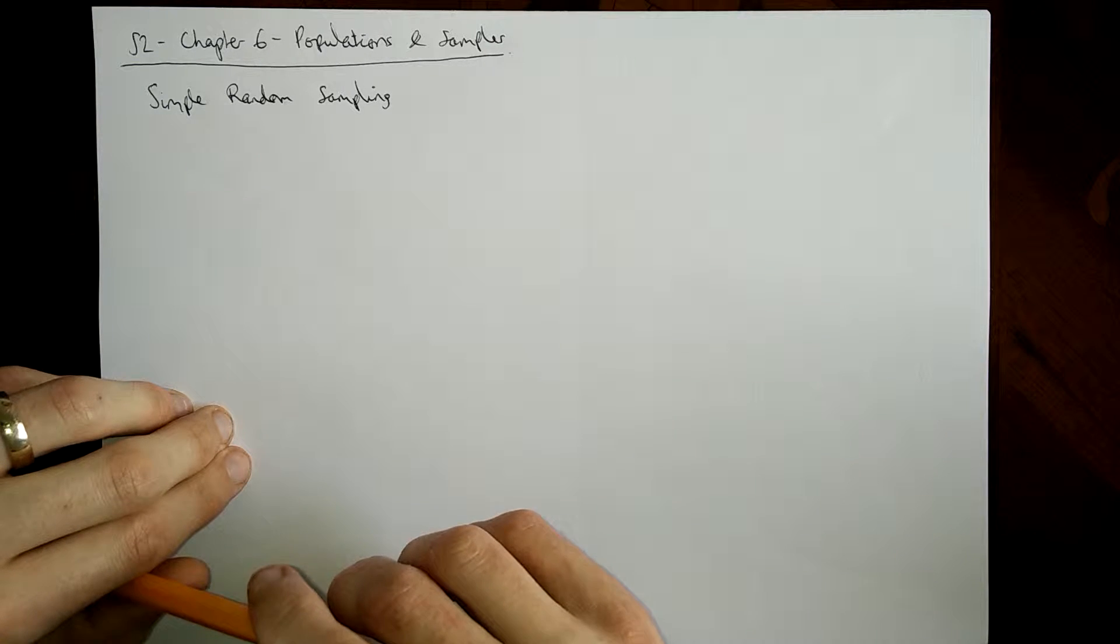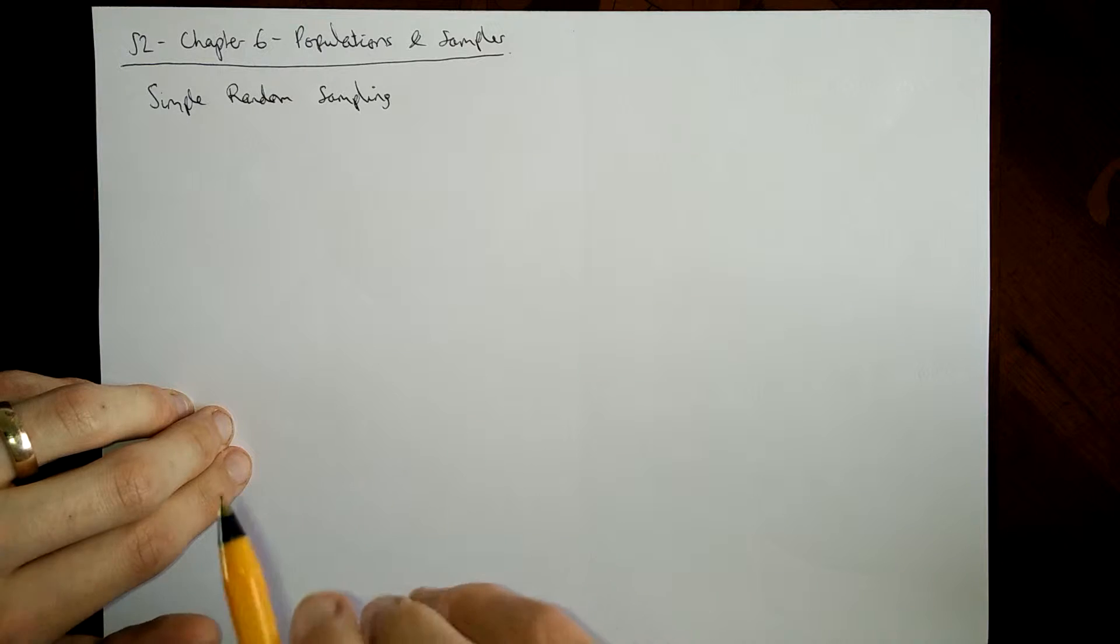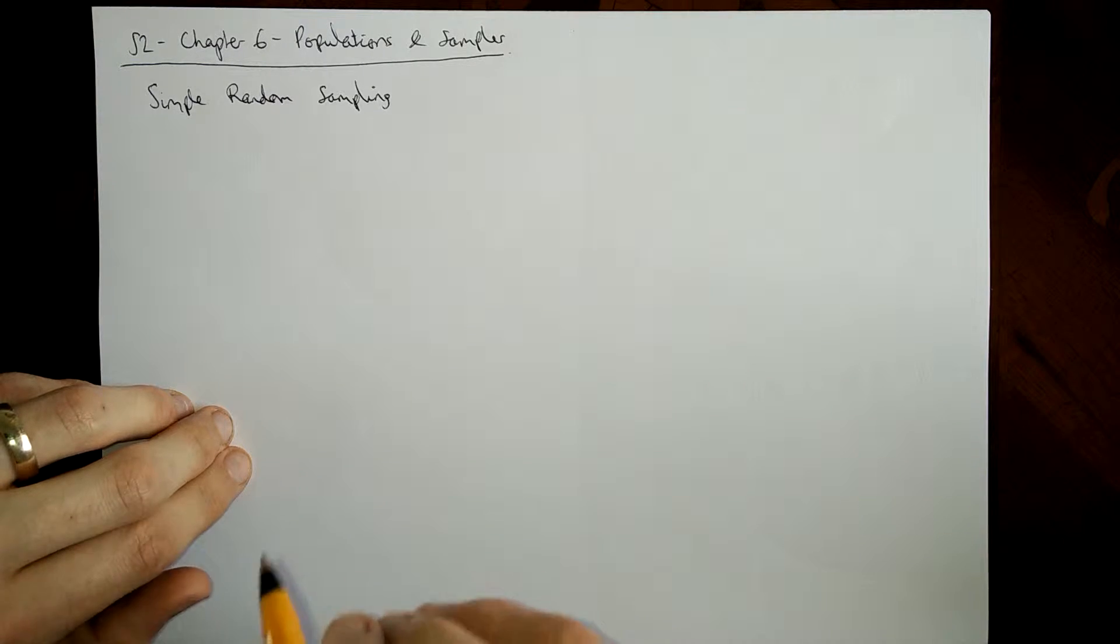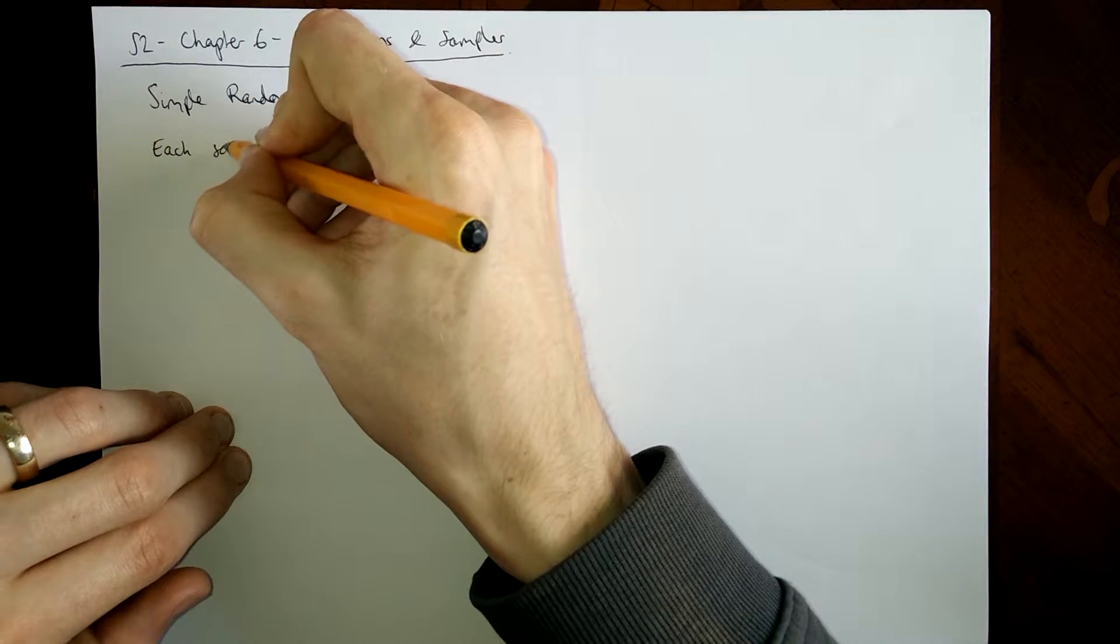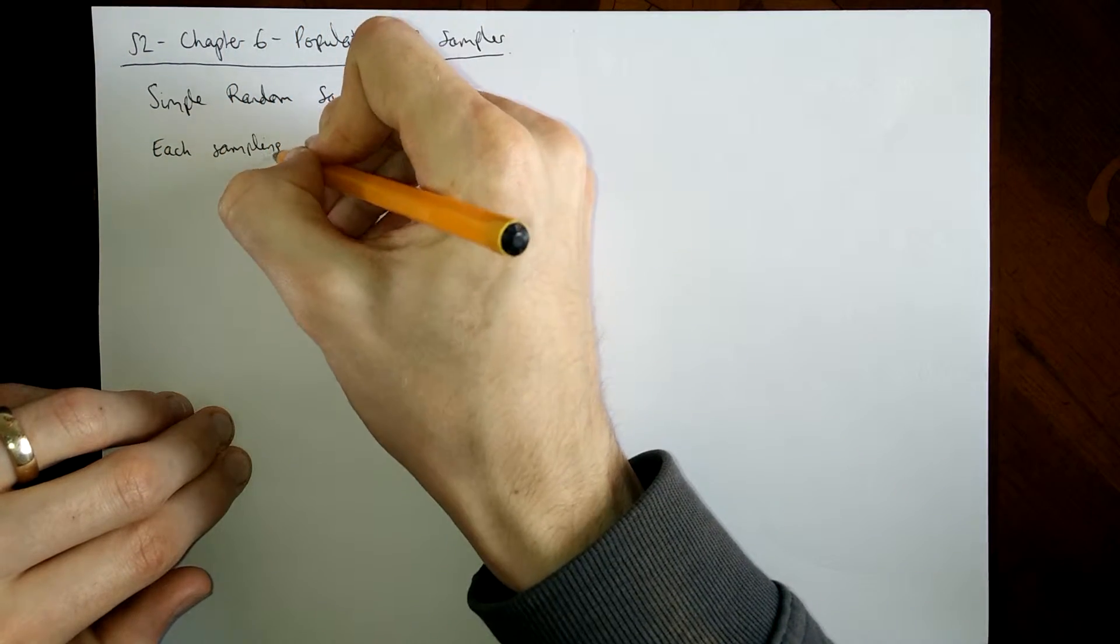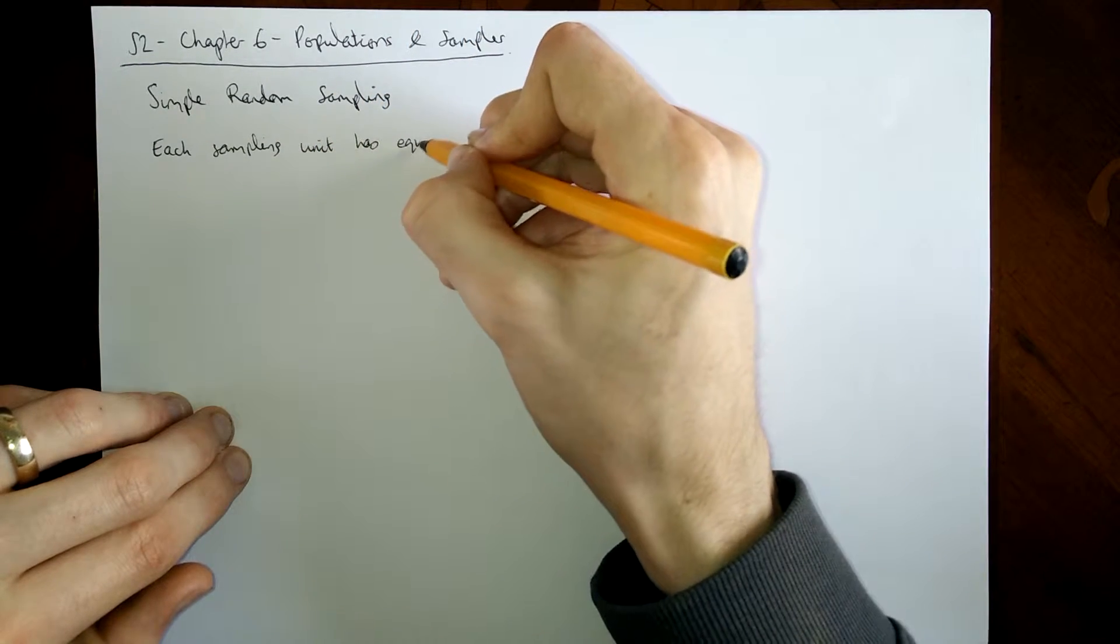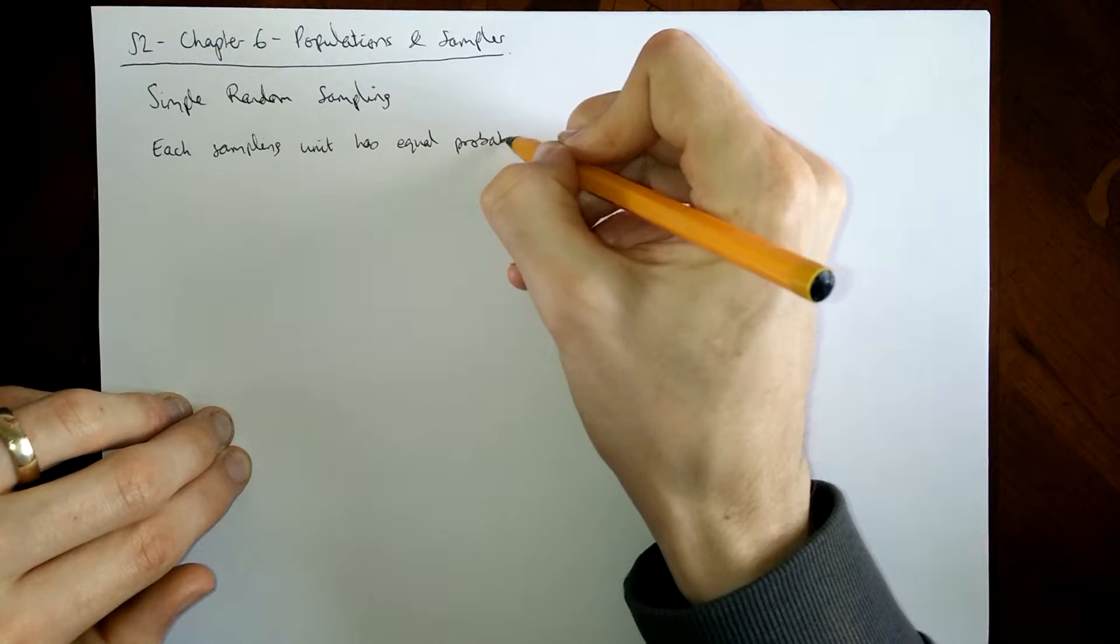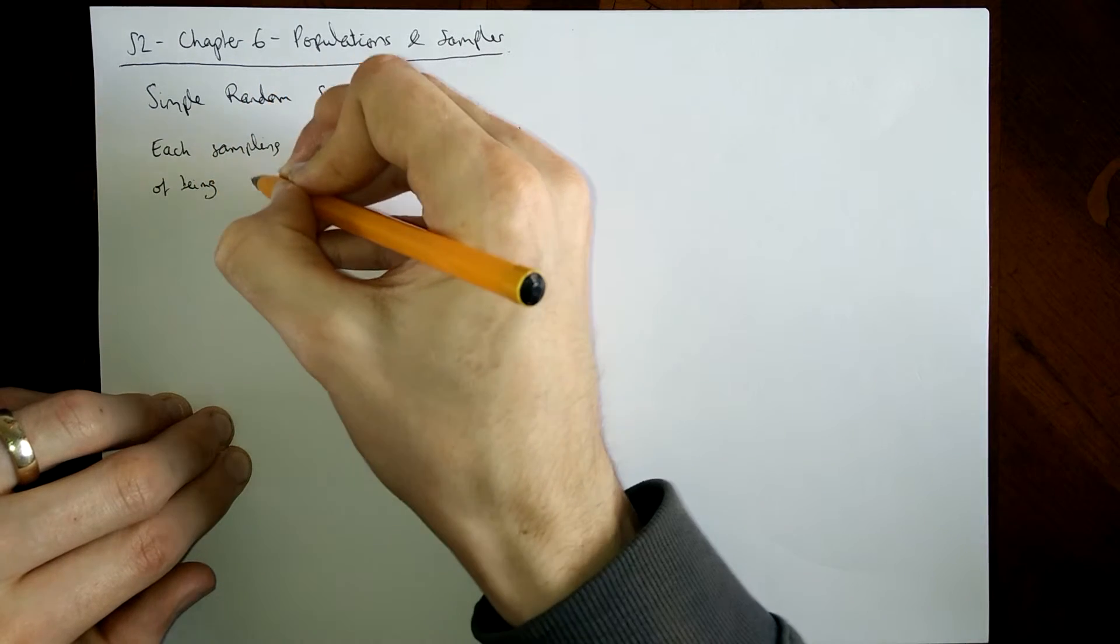The first thing to talk about then is what a simple random sample is. Now, sampling is difficult, mostly because getting a sample that's not biased is obviously desirable and sometimes quite hard to do. Simple random samples are, by definition really, not biased. The way you ensure it's not biased is to make sure that each of your sampling units, each individual in your population, has an equal chance of being picked.